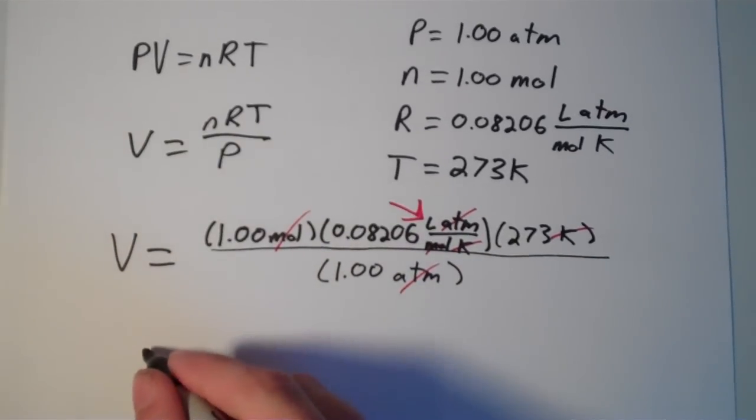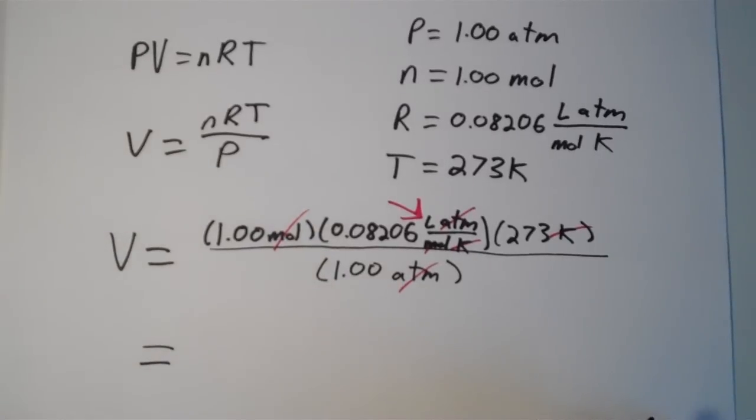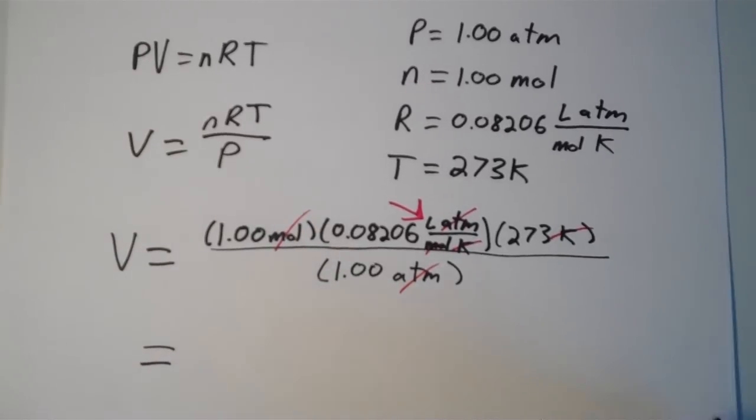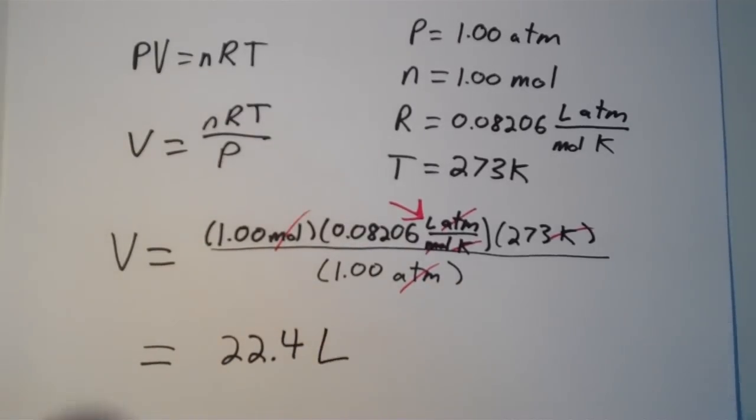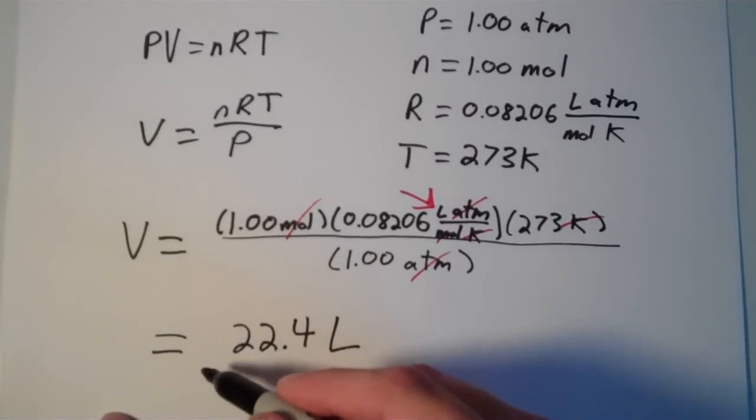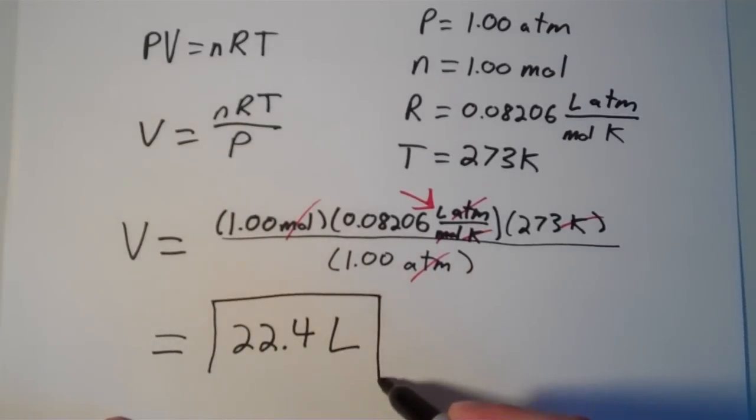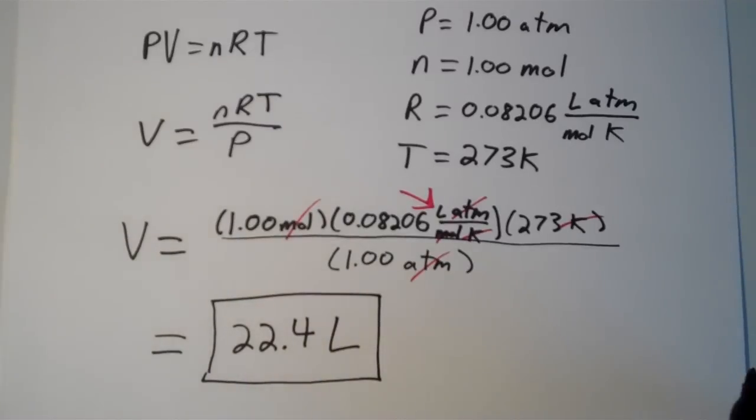And the volume, if you were to put this into a calculator, would be 22.4 liters. So 22.4 liters is the volume of one mole of an ideal gas at standard temperature and pressure.